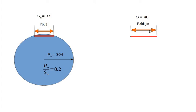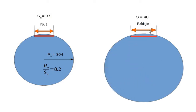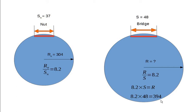Here's the bridge. The string spacing between the outermost saddles is 48mm. What's the radius at the bridge? We know that the radius divided by the string spacing is 8.2. By a simple rearrangement, we can say that 8.2 times the string spacing is the radius. In this case, 8.2 times 48 is 394mm.